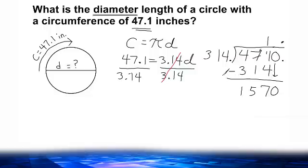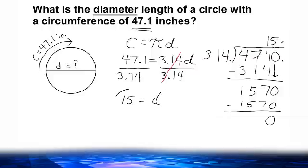Dividing 314 into 1570, that can fit into 1570 five times. Five times 314 is exactly 1570, leaving us with no remainder. So we have figured out that the diameter of this given circle is equal to 15 inches.